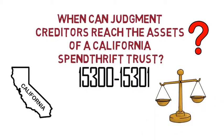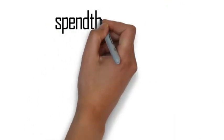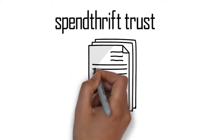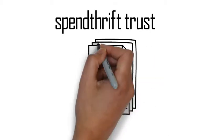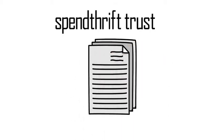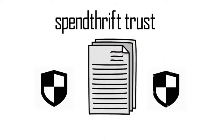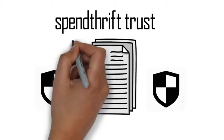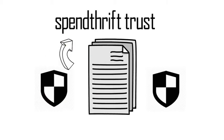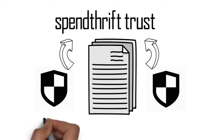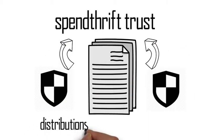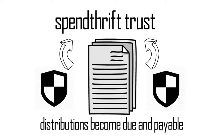A spendthrift trust is one where there is a restraint written in the trust instrument to prevent a transfer of the beneficiary's interest. This protection does not exist with respect to distributions from a spendthrift trust once those distributions become due and payable.